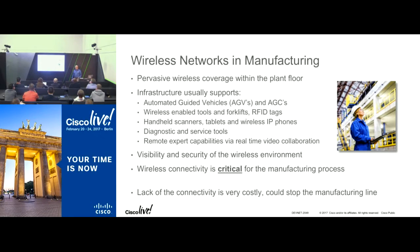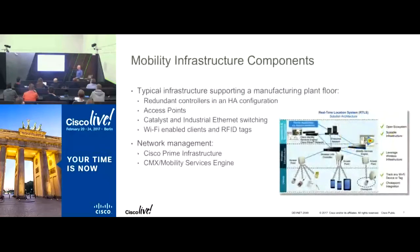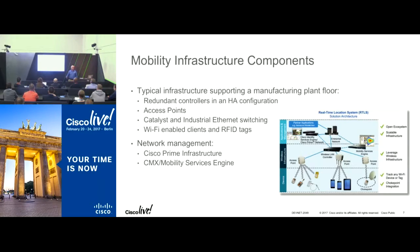Please let's keep this session interactive. If you have any questions, please ask. This is a session where I hope all of us learn something. The typical wireless infrastructure includes high-availability controllers, industrial or catalyst switches, a variety of Wi-Fi-enabled devices and RFID tags, Cisco Prime Infrastructure, and Cisco Mobility Services Engine — a very proven, highly available architecture.